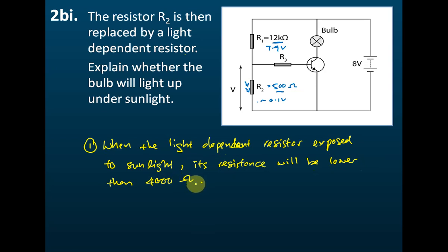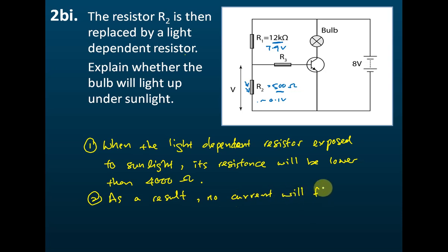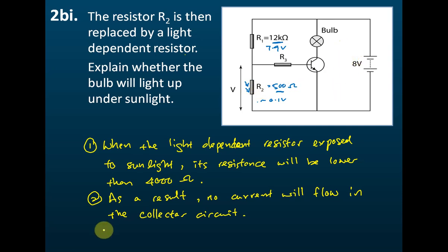As a result, no current will flow in the collector circuit, because the collector circuit is controlled by the base circuit and the resistance of R2 must be at least 4,000 ohms for current to flow in the collector circuit. Since the LDR exposed to sunlight has a resistance of only a few hundred ohms — lower than 4,000 ohms — no current flows in the collector circuit, and therefore the bulb will not light up.